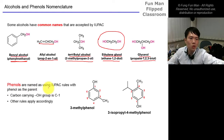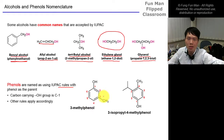Phenols are named using IUPAC rules when phenol is the parent. This molecule is called 3-methylphenol because phenol is the parent group and we have a methyl substituent at position 3. Another example is 3-isopropyl-4-methylphenol — I comes before M in alphabetical ordering.